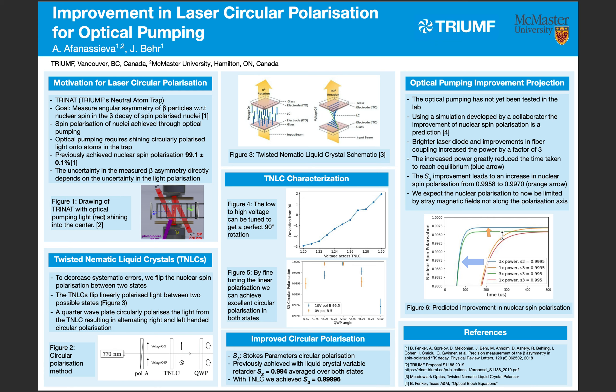That difference is shown by the orange arrow. Additionally, a separate unrelated increase in power — resulting from replacing the laser diode and improving the optical fiber coupling — led to a three-times power increase, which greatly reduced the time taken to reach an equilibrium state with the nuclear spin polarization.